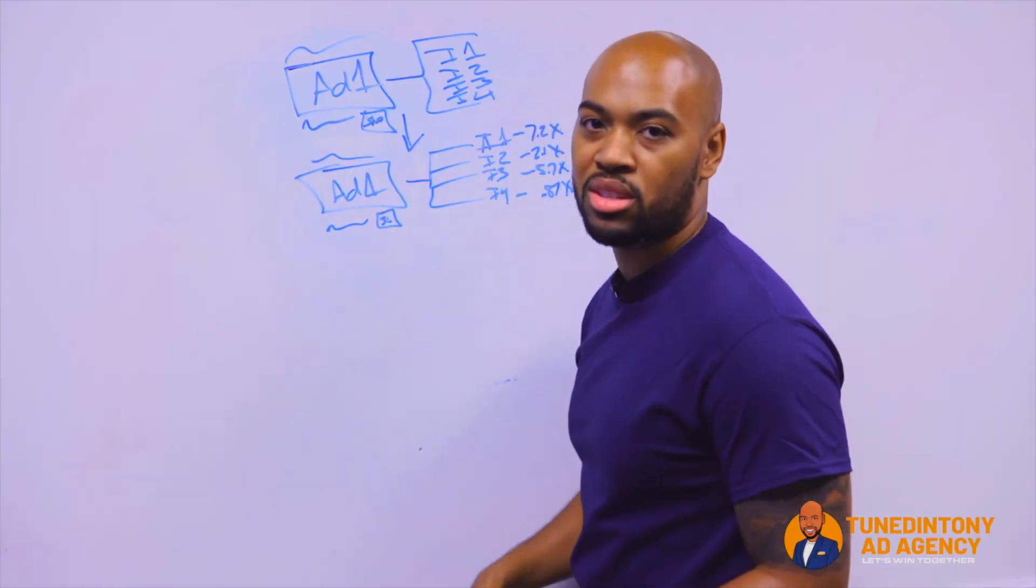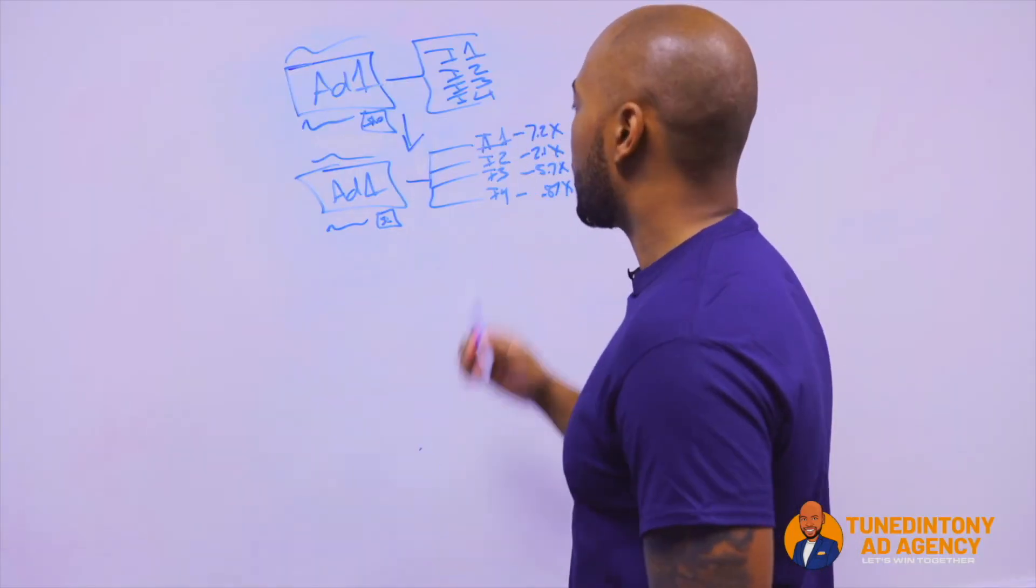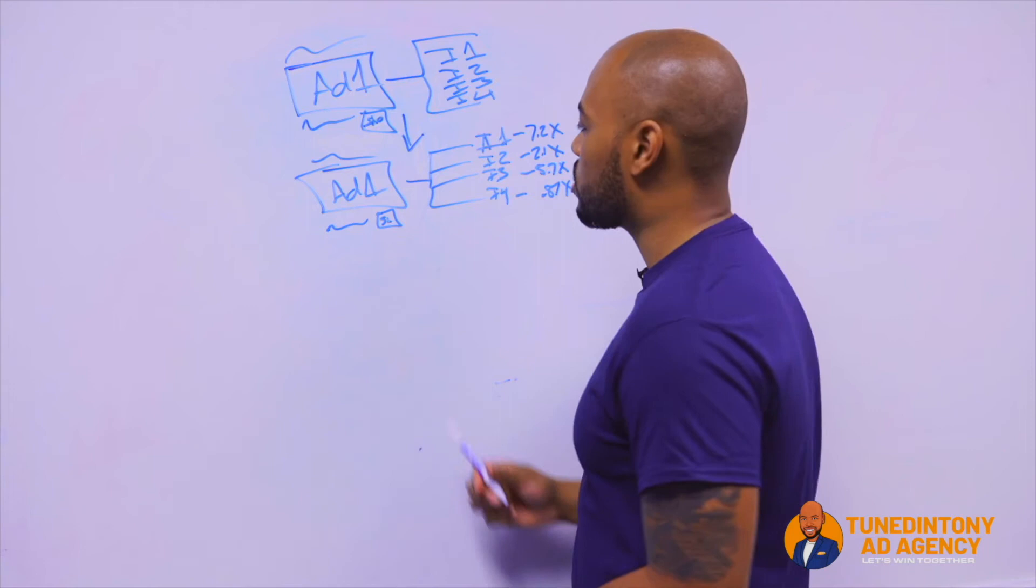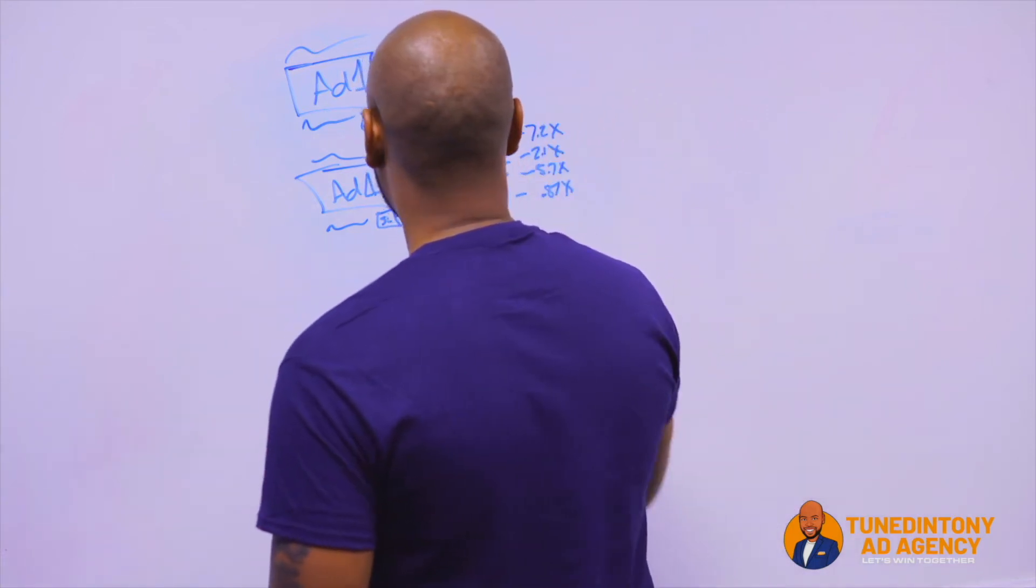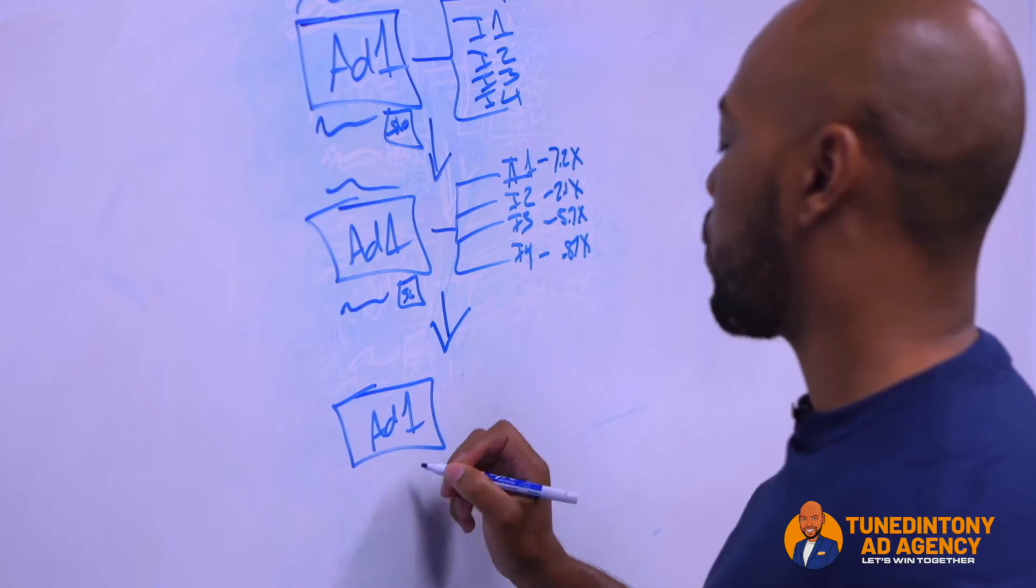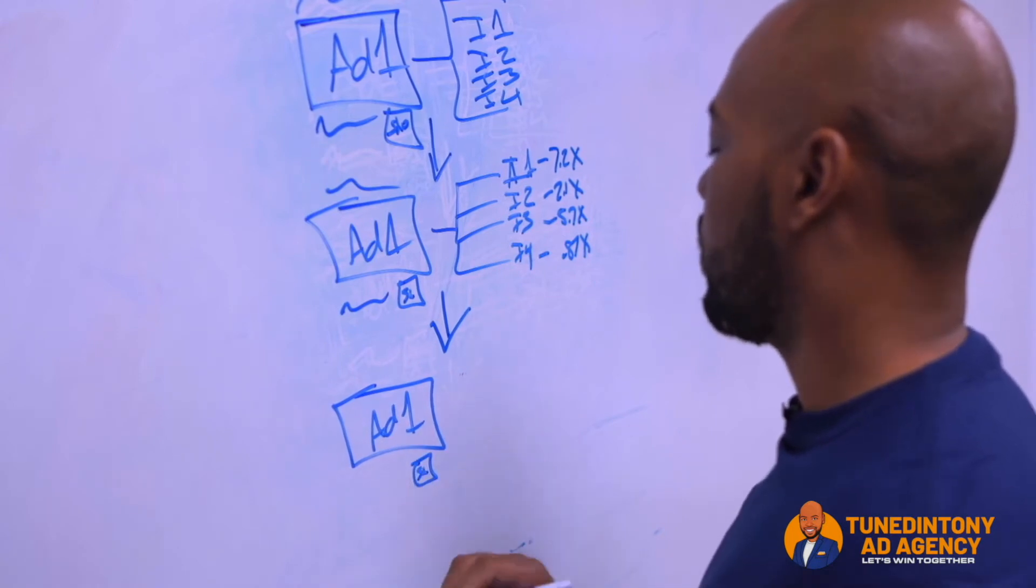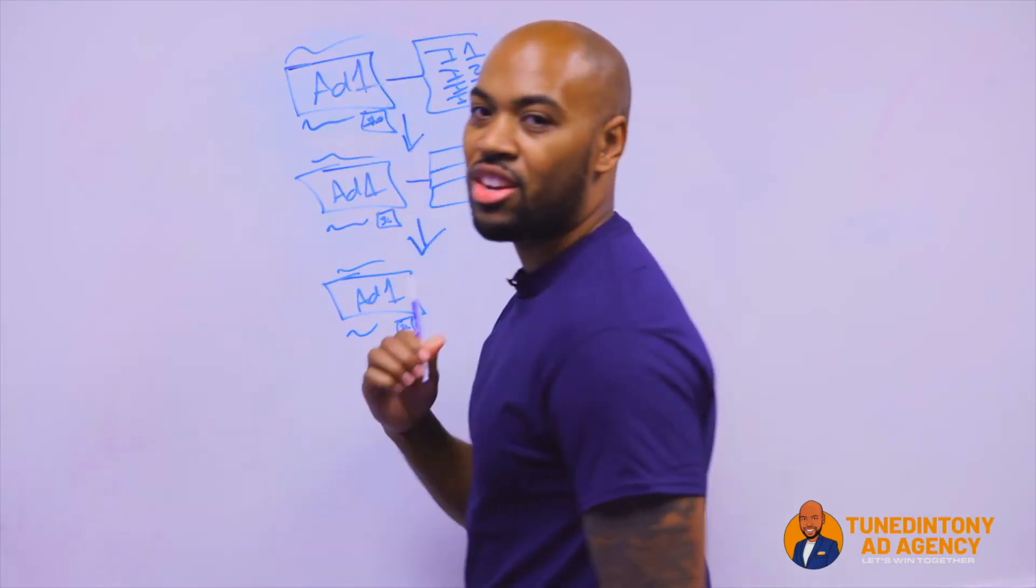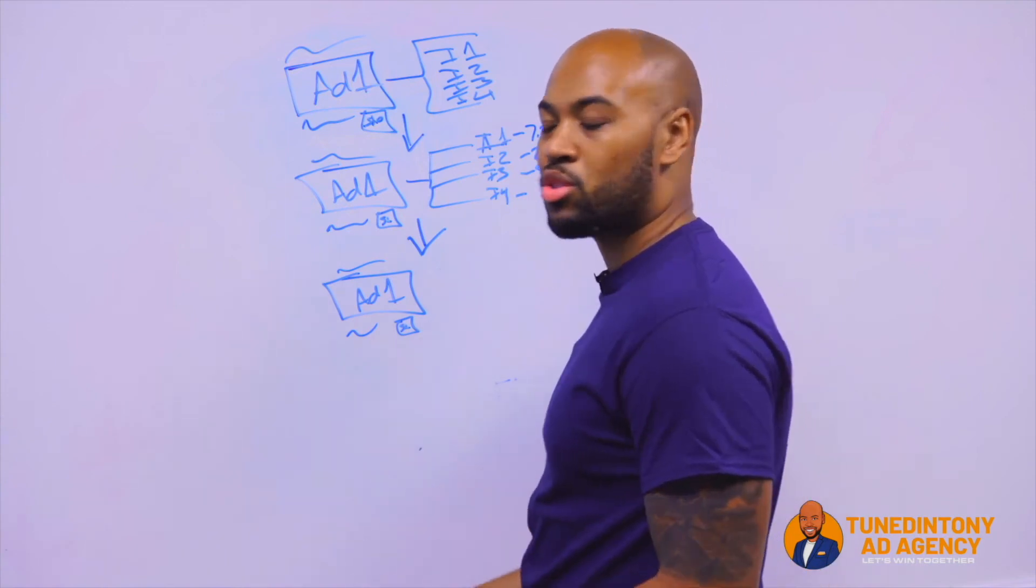Then now what we're going to be able to do in the next round is we're going to downward vertical this, and we're going to take ad one. But now what we're going to do to mix it up is we're going to add in another piece of creative - so another image or another video.